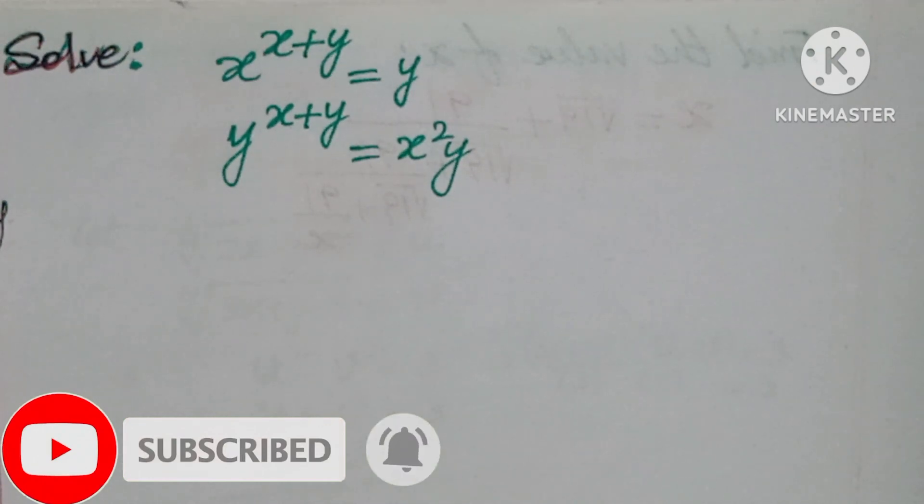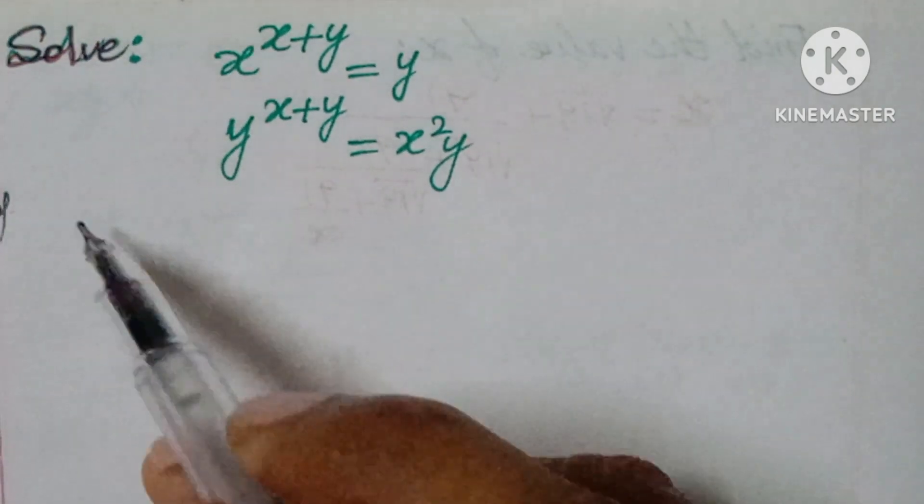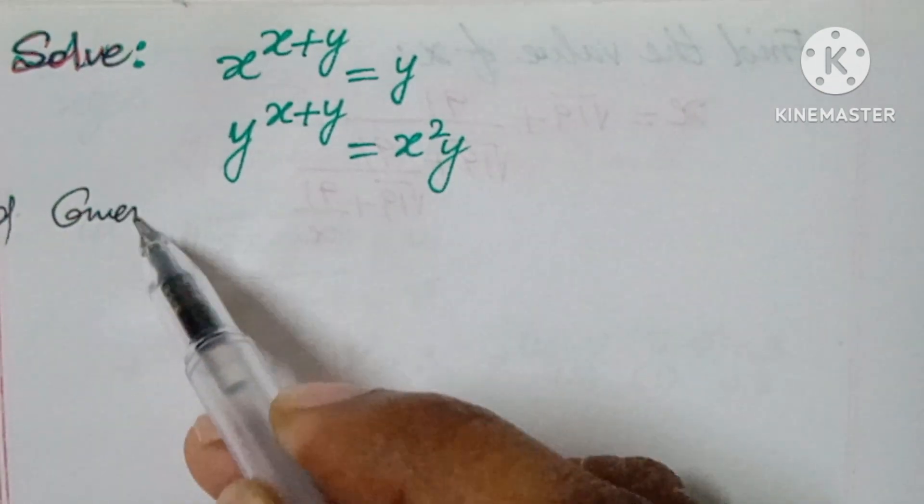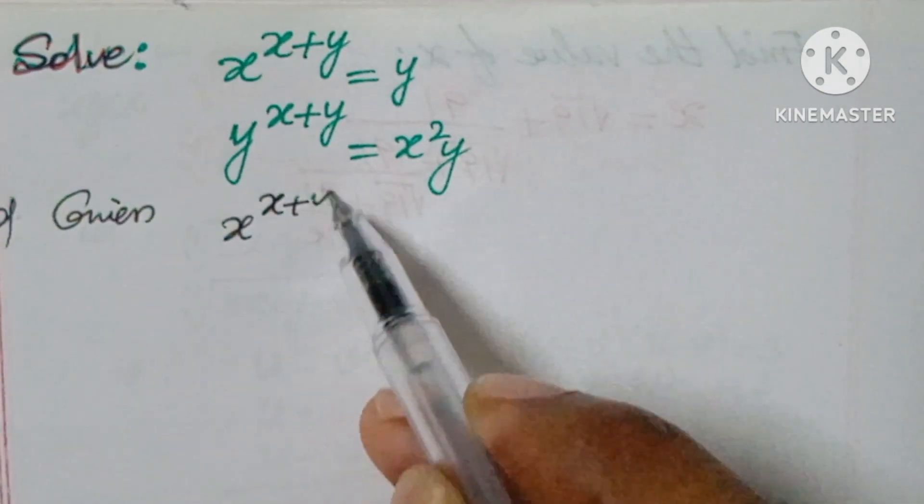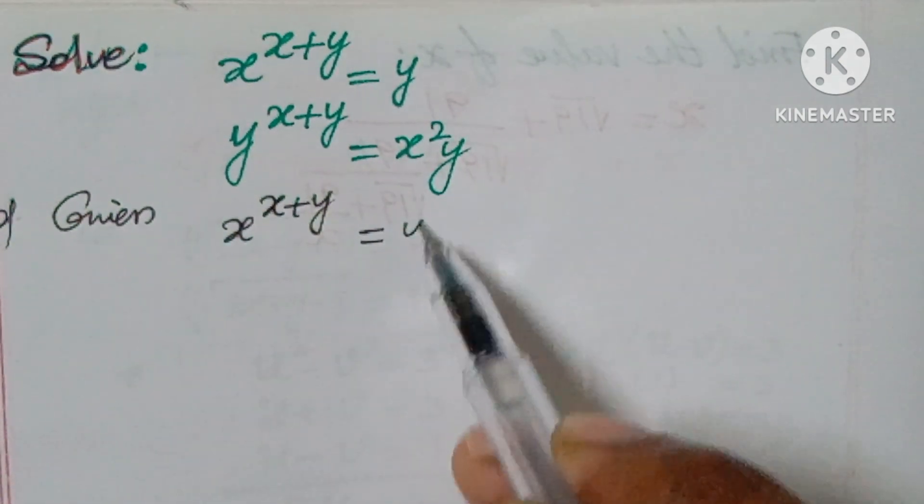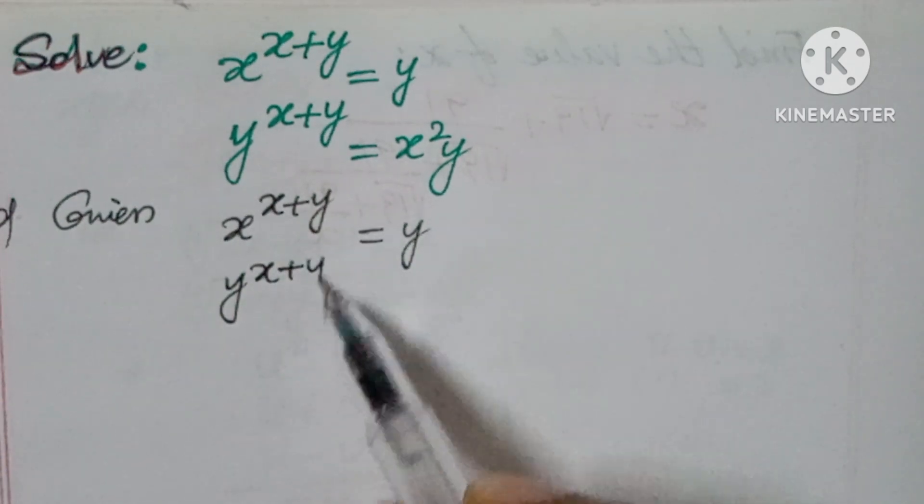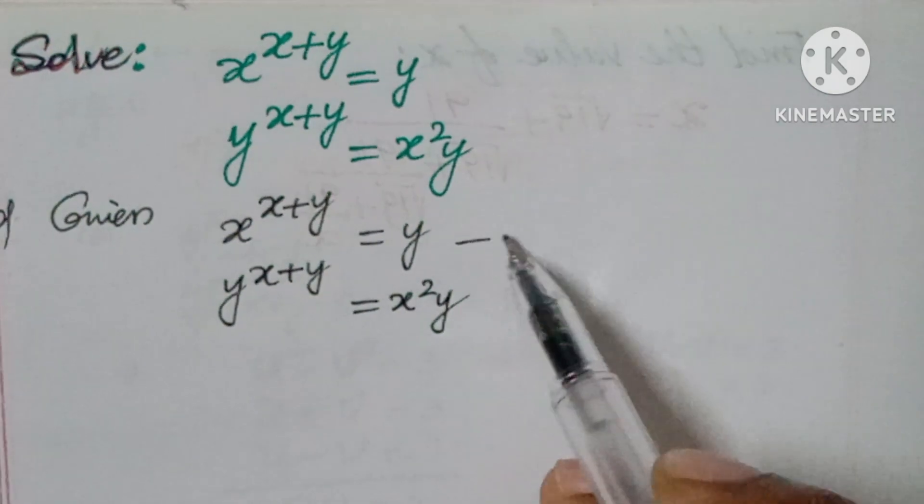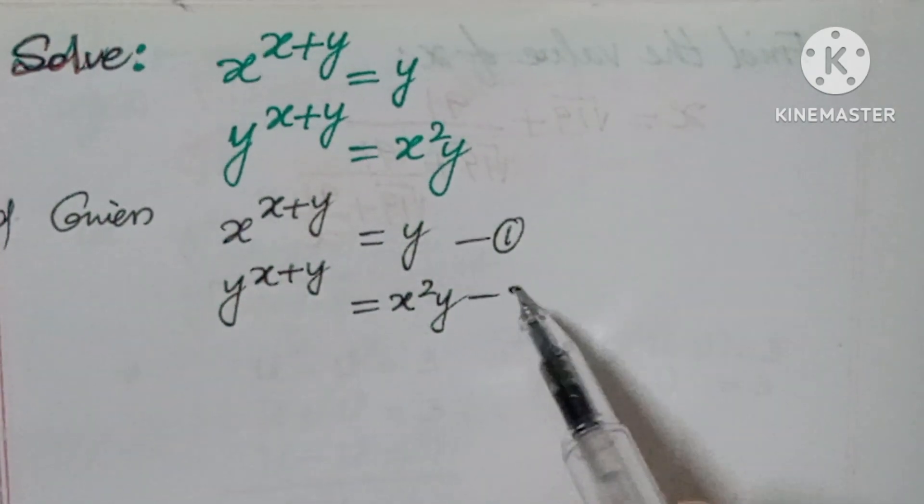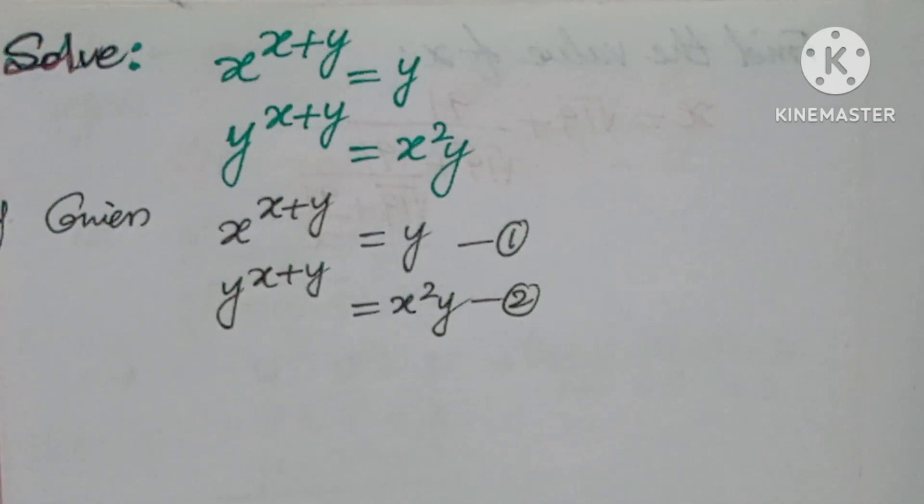To make more videos, more than 500 math and logical problems are uploaded in this channel. Please go through them. So here, first of all, what is given: x to the power of x plus y equals y, and y to the power of x plus y equals x squared y. Let us take it as the first equation and the second equation.